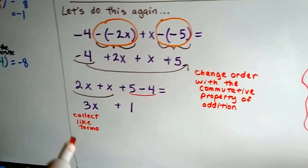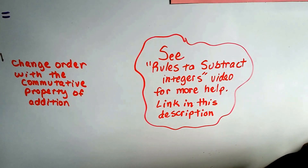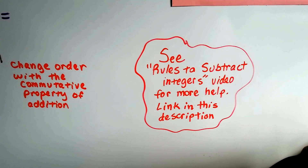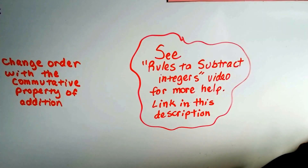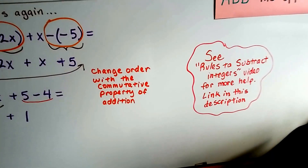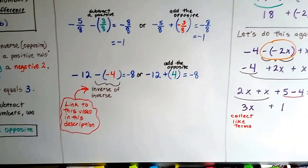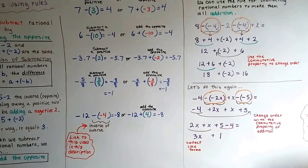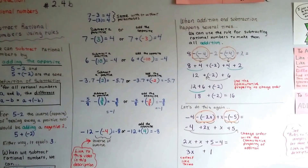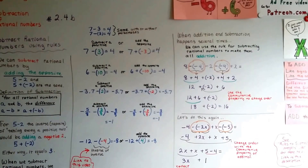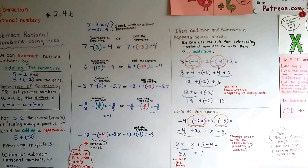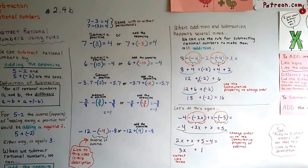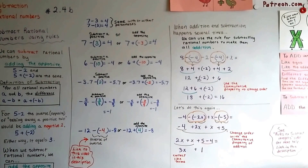If this is still very confusing and you want more help, there's a 6th grade video explaining the rules to subtract integers that is probably explained a little more easily, and its link is in the description. There are two links: one for the rules to subtract integers from 6th grade and one for the inverse of inverse. Hopefully those will help. That's how to subtract rational numbers using rules. In 2.4c we'll talk about subtracting rational numbers when we have brackets and braces.